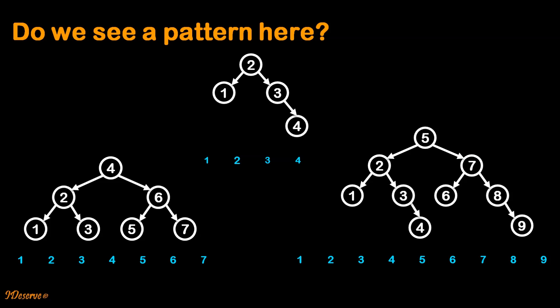If we look closely, the root node is the middle element of the sorted array. Now let's consider the left subtree of the binary search tree. We observe the same pattern: the root nodes of the left subtree are again the middle elements of the left half of the sorted array. For example, consider the highlighted BST — the root node of the left subtree is 2, which is the middle element of the left half of the sorted array from 1 to 3.